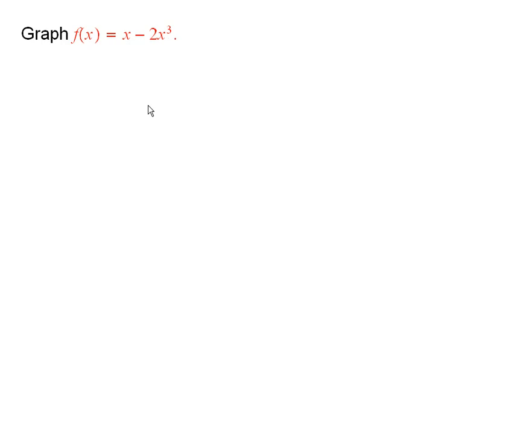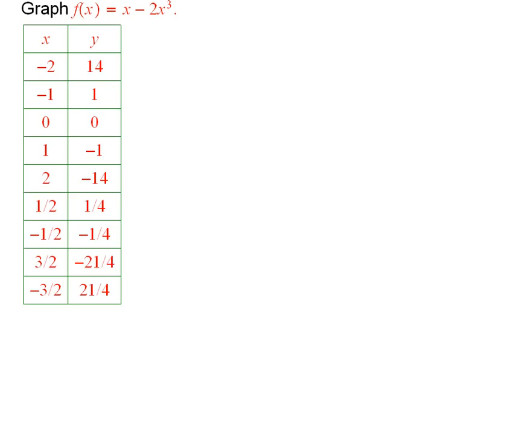So first of all, I need to find the ordered pairs. Here's a table of ordered pairs. The ordered pairs are negative 2, 14, negative 1, 1, 0, 0, 1, negative 1, and so forth.